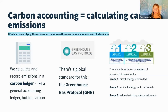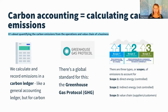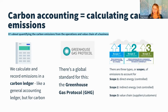I'm going to cover briefly what carbon accounting is. Essentially, it's about quantifying the carbon emissions from the operations and value chain of a business — calculating and recording emissions in a carbon ledger, which is just like a general accounting ledger, but for carbon. There is a global standard called the Greenhouse Gas Protocol. Scope one is direct energy that you control in your business — for many people, that's things like fuel in a fleet vehicle.